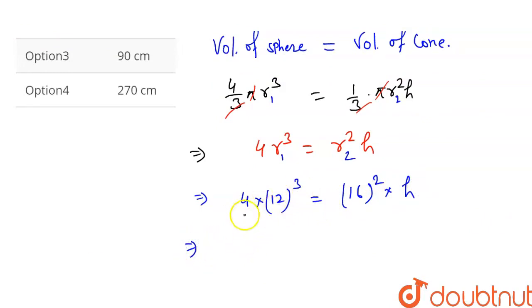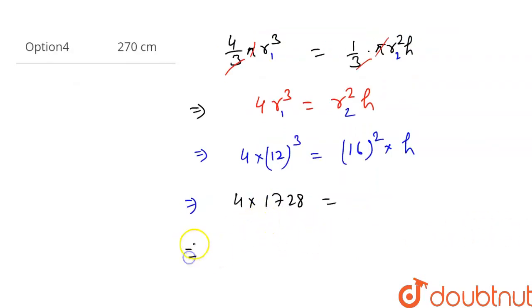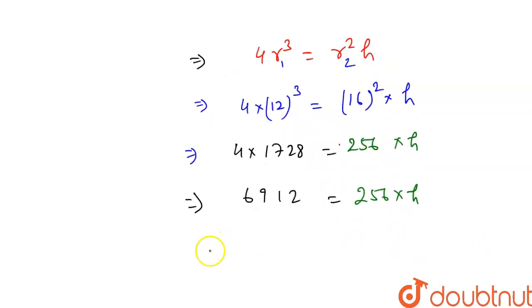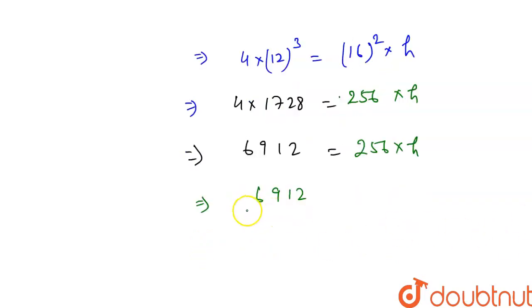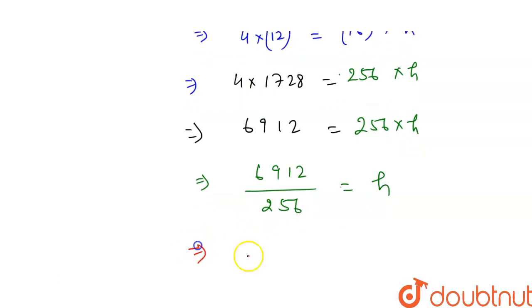12 cubed equals 1728, so 4 × 1728 = 6912. 16 squared is 256. So 6912 divided by 256 equals h, which gives us 27.